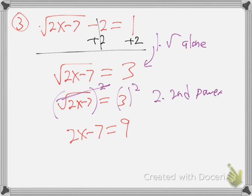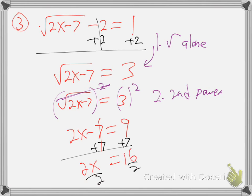That always cancels out the root on one side and squares on the other. On one side it's like poison and antidote — they cancel. On the other side you've got a square because there's nothing to cancel the two. Then solve for x. Add the seven: we get 2x equals sixteen. Divide by two: x is eight — maybe. We have to check it to see if it's really the right answer.